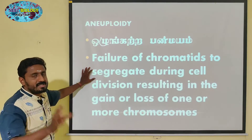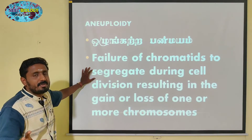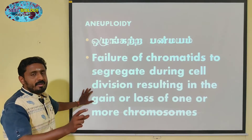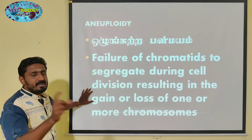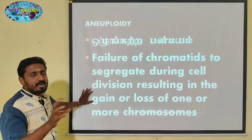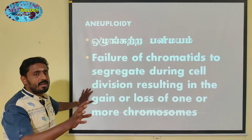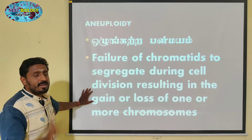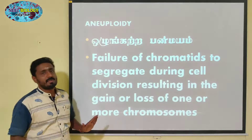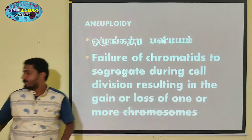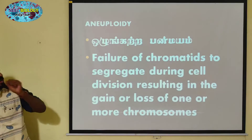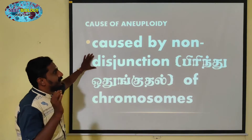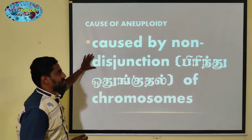During cell division, chromosomes can be gained or lost — resulting in 1 chromosome extra, 2 chromosomes, or 3 chromosomes. This condition is called Aneuploidy, and its cause is non-disjunction.